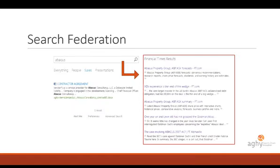But what do we do if we cannot crawl a content source? For example, sources like Financial Times, Wikipedia, or MSDN are so large and updated so frequently that crawling them doesn't make sense. In this case we can use a remote index, as mentioned earlier. In this example you can see results from Financial Times displayed directly in SharePoint search results.